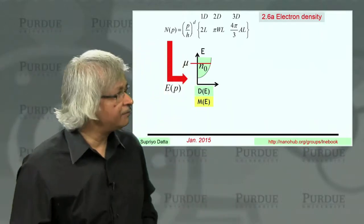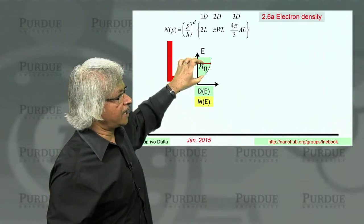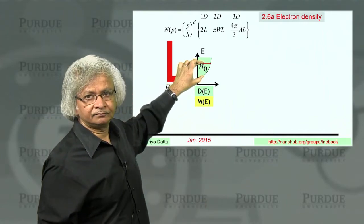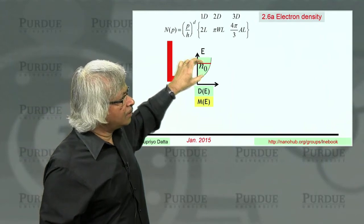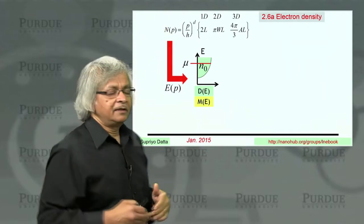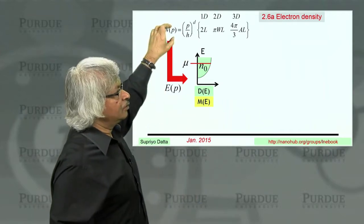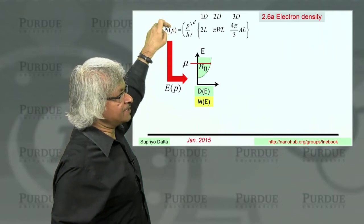So how many electrons would we have? Well, it would basically be whatever many states you have below mu. So what does N tell us? This N tells us how many states are actually there whose momentum is less than p.